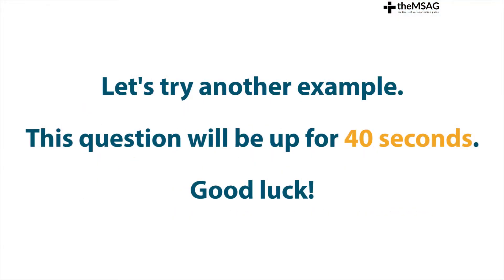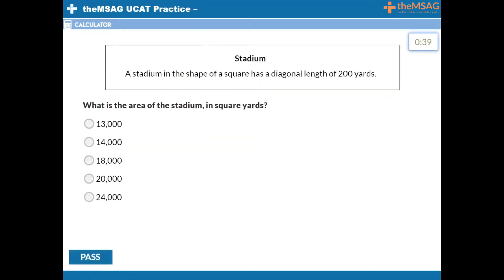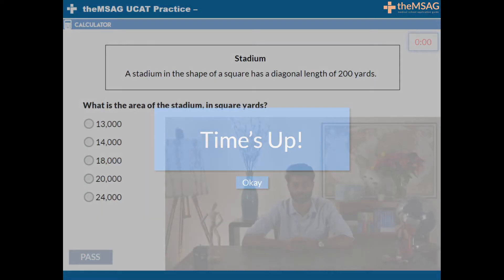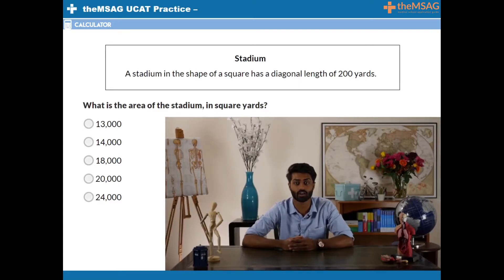Let's see if you get confused when the question is phrased differently. Question 2. A stadium in the shape of a square has a diagonal length of 200 metres. What is the area of the stadium in square metres?